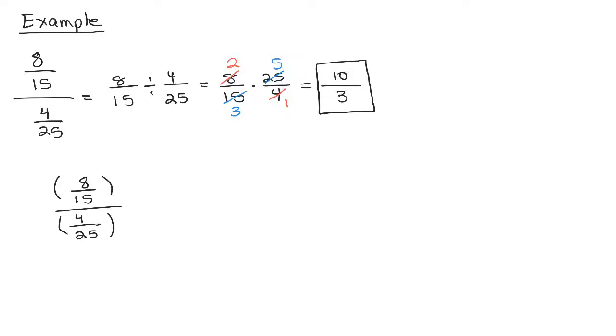So one way I figure it out is I build it up. I know to get 15 I need 3 times 5, and to get 25 I need 5 times 5. I already have one 5, so 5 times 5. So this number must be the least common denominator, 75.